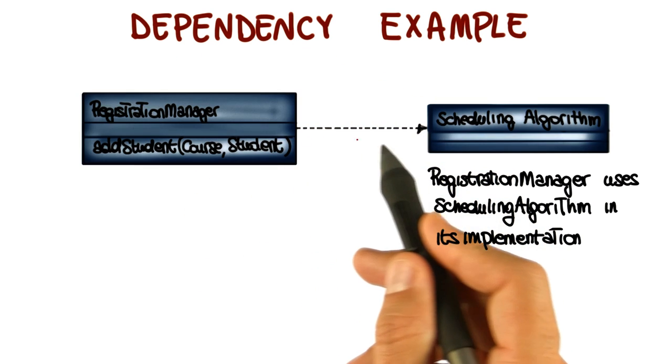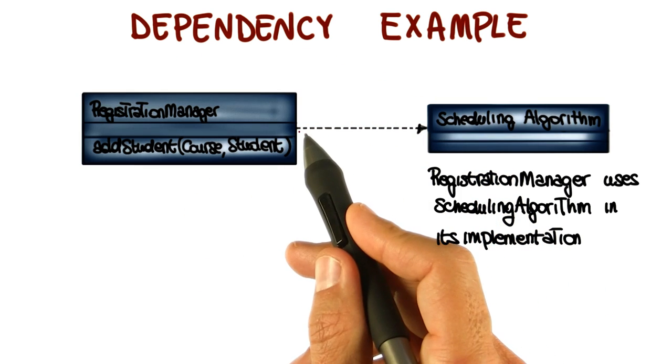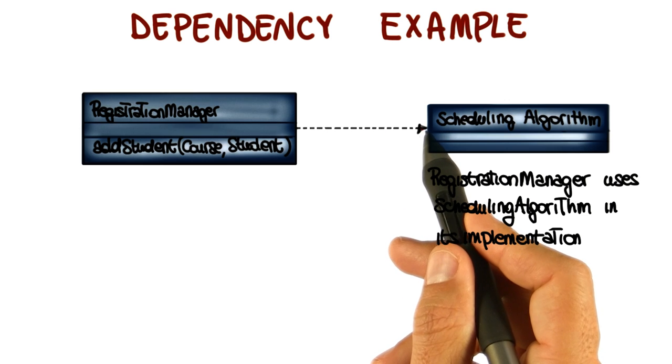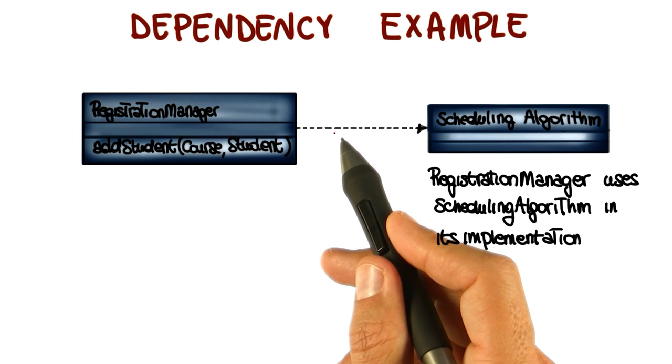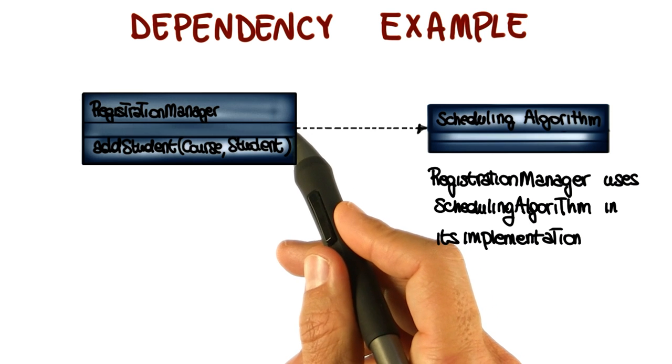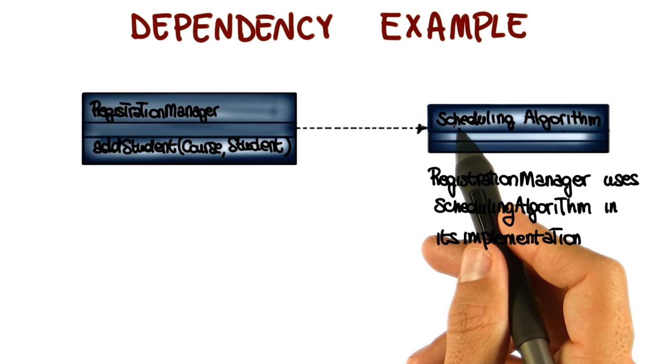Here in this example, I'm showing a dependency example involving the registration manager and the scheduling algorithm. As you can see, the dependency is indicated with a dashed line pointing from the client to the supplier.